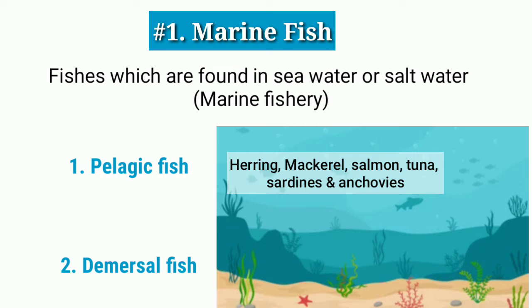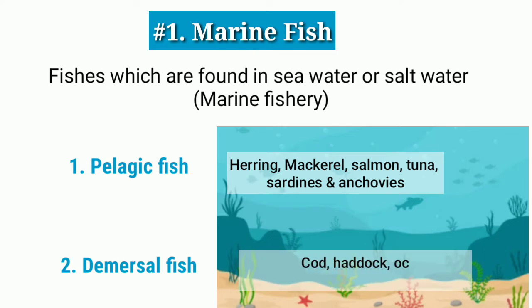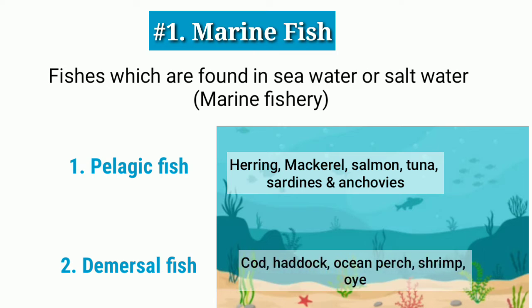The next category of marine fish is demersal fish. Demersal fish are mainly found at the bottom, or we can say near the seabed. The examples are cod, haddock, ocean perch, shrimp, oyster, clams and crab.